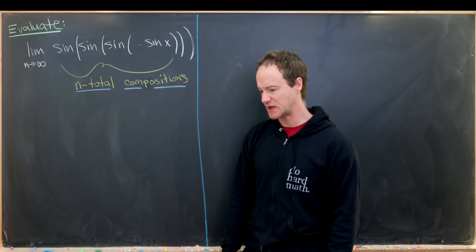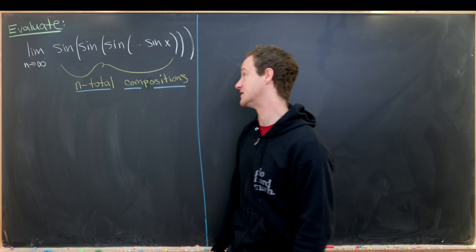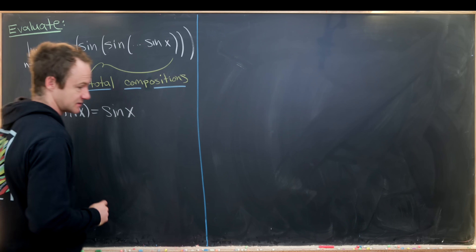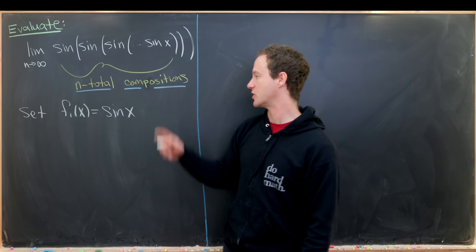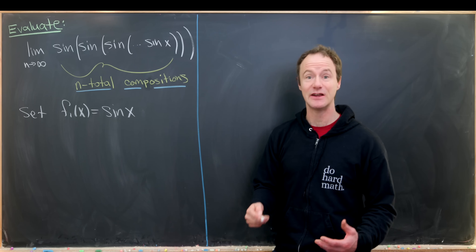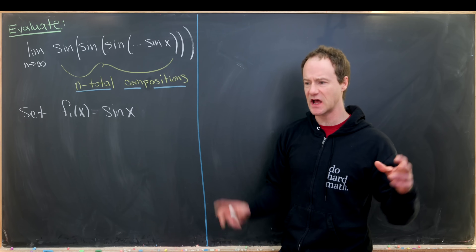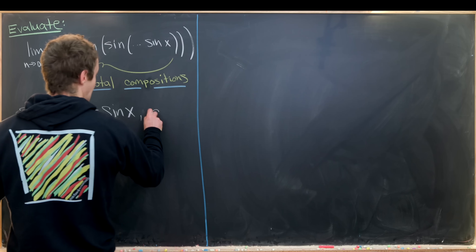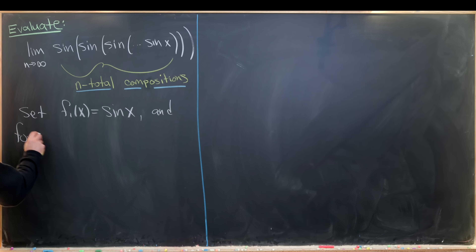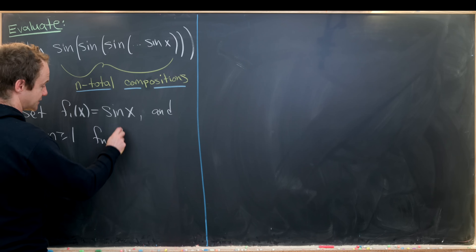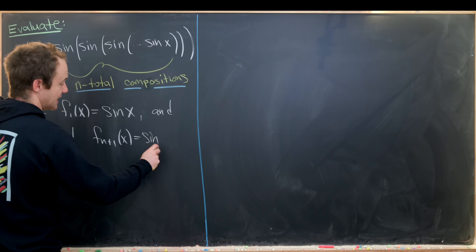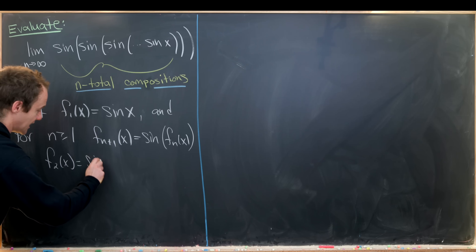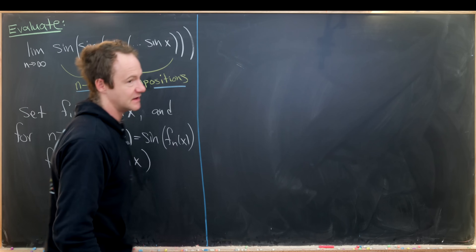Before we get started, let's introduce some notation to make this easier to work with. We'll set f₁(x) equal to sine of x, and we're writing the argument of this limit as a sequence of functions via an obvious recursive structure. So we let f₁(x) be sine of x, and for n ≥ 1, we have fₙ₊₁(x) equals sine of fₙ(x). So f₂(x) equals sine of sine of x, and so on.